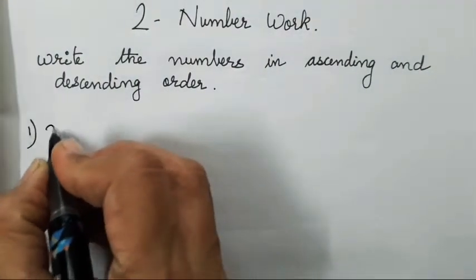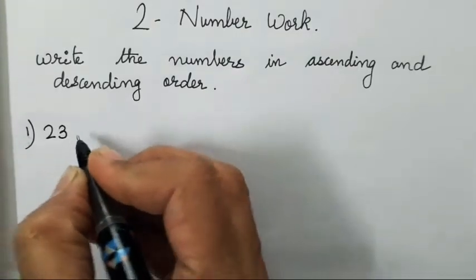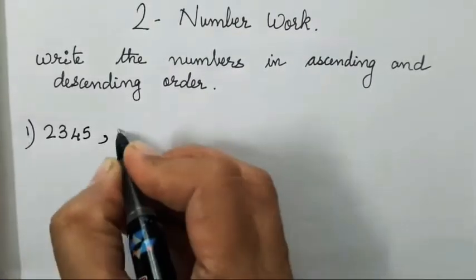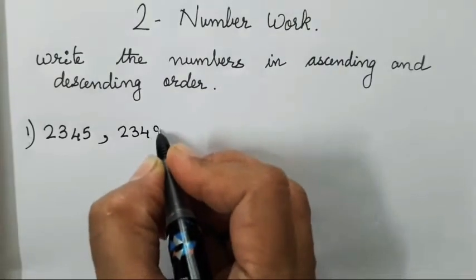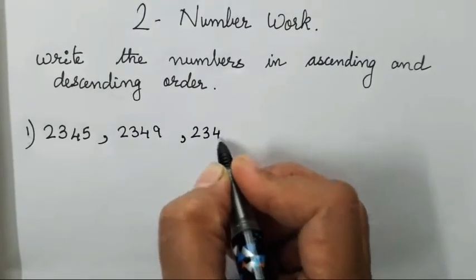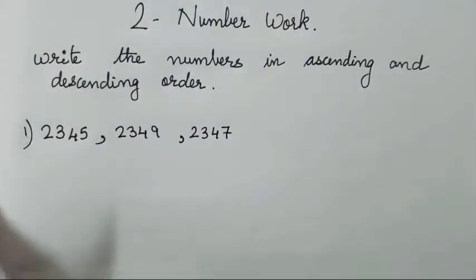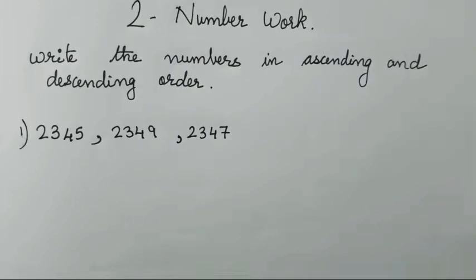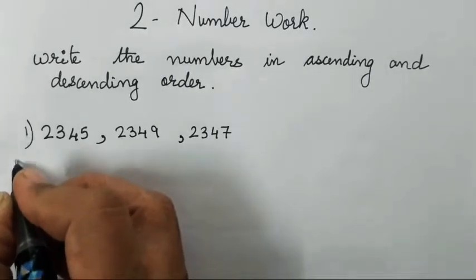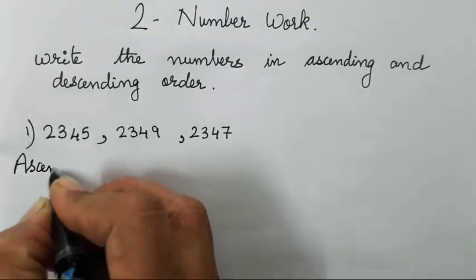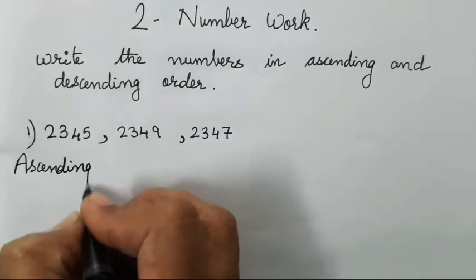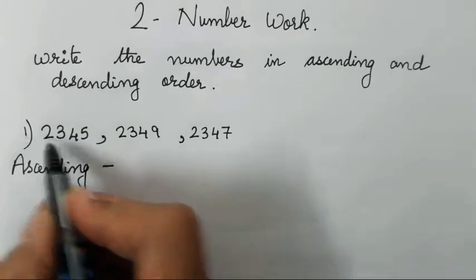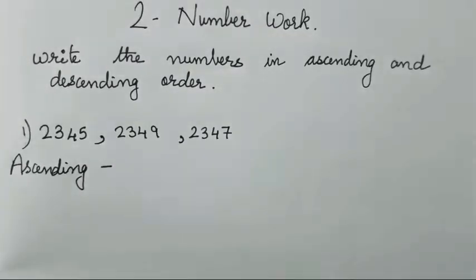So let's start with the first question. First you will see they have given 2345, 2349 and 2347. So you will see everywhere 2000 is there. So how to find what is ascending? I'm going to write ascending in the easiest way. First number you have to check. It is 2. Next you have to check 3, so 23.